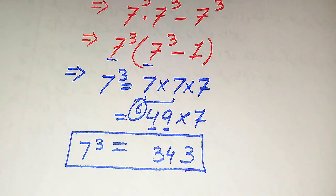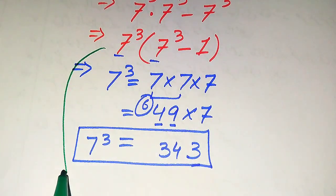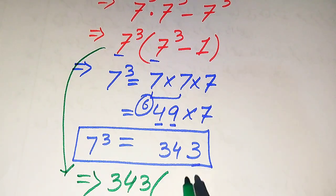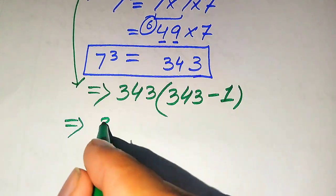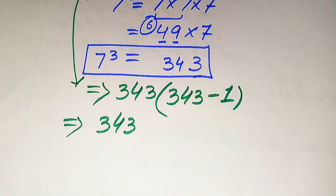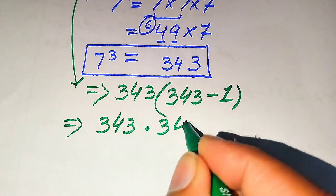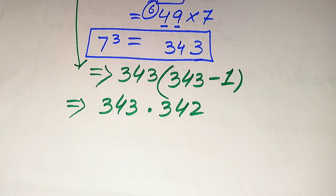Now we replace this value in both places in the expression. Substituting 343, the expression becomes 343 times (343 minus 1), which gives us 343 times 342. Since these are two larger numbers and the calculator is not allowed, we need a smart technique to multiply them.